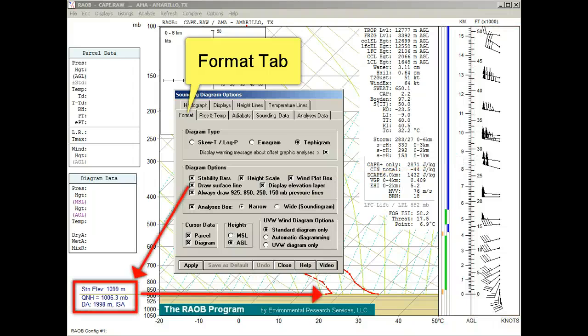The draw surface line indicates the position of the surface point, plus lists the station elevation, altimeter, and density altitude values.